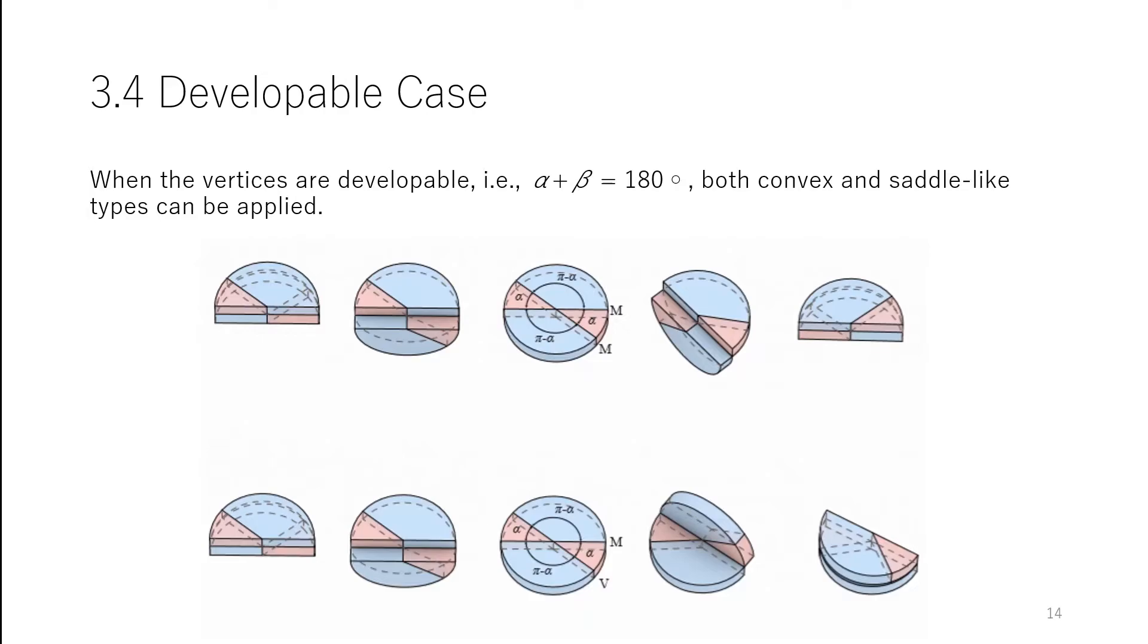The folding motion of the vertex is singular. An opposite pair stays unfolded, while the other pair continuously fold. These transforming and non-transforming pairs switch in the developed state.